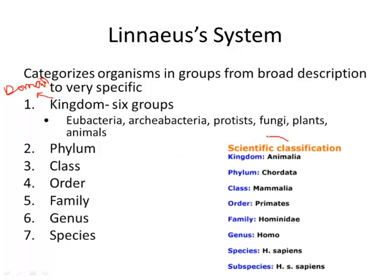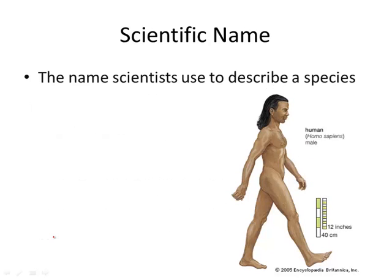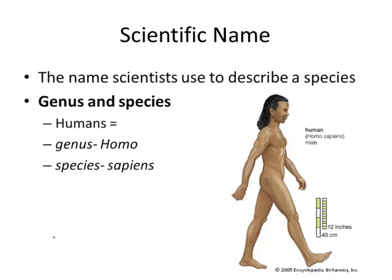Here we have an example of humans categorized into those different classifications, going from the most general to the most specific. When naming an organism, we give the last two groups — the genus and species. For humans, our genus is Homo and our species is sapiens, so humans are Homo sapiens. Lions, for example, are Felicis leo. We use this binomial name because common names like 'cat' can refer to a house cat or a wild cat like a tiger.